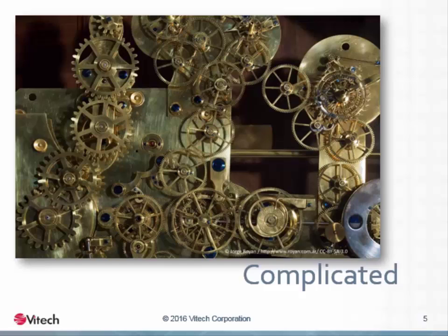Analytic thinking is particularly good at understanding complicated problems — problems involving a high level of detail, but operating in deterministic ways. The clockworks pictured here is a good example. Despite the number of gears and interactions, the system functions deterministically. A given rotation of any one gear will translate into a given rotation in any other. All we need to know to predict their rotations is the diameter and position of each gear. This is a complicated system, and analytics works fine here.